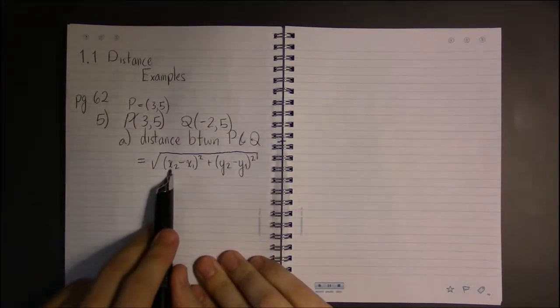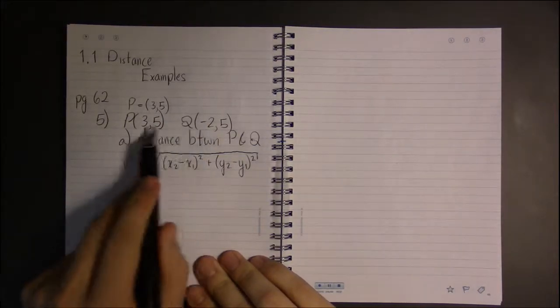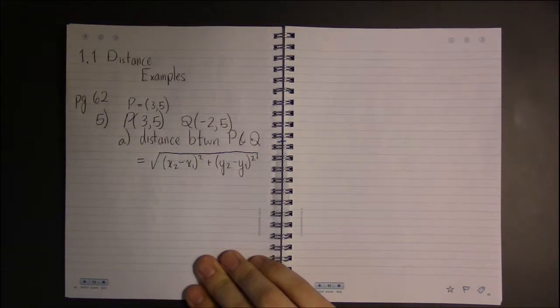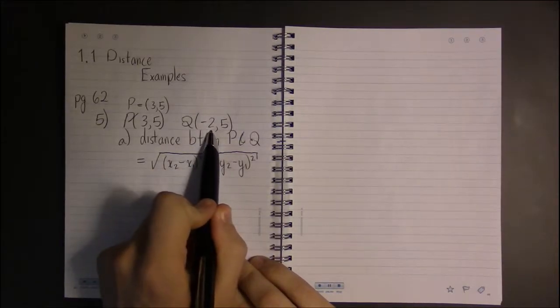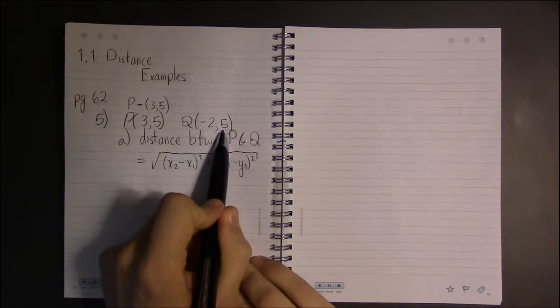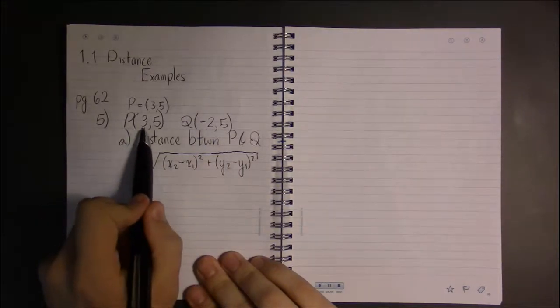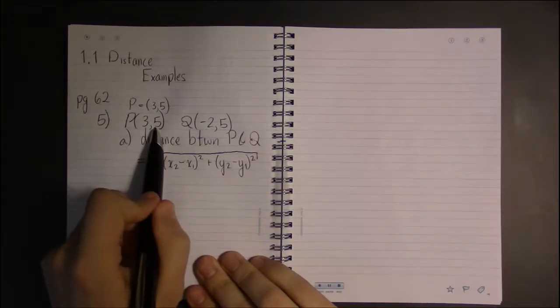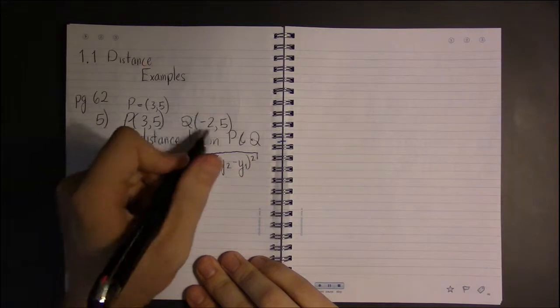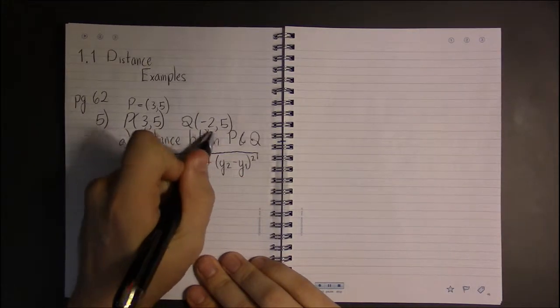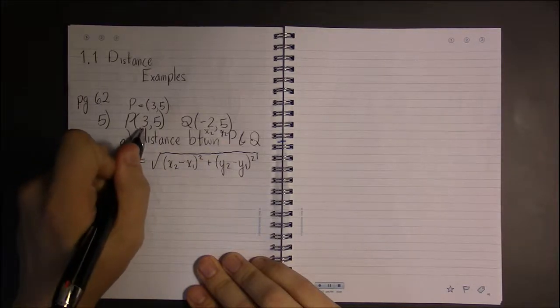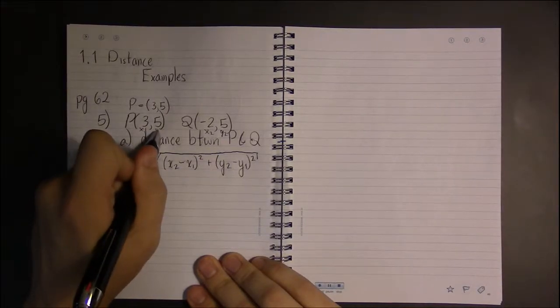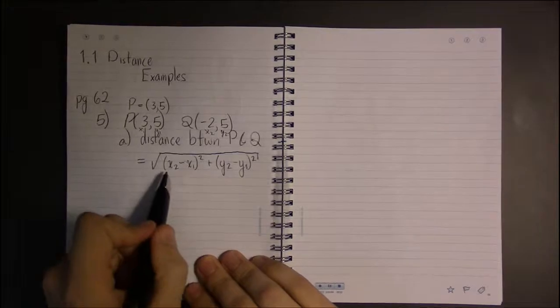Now the question is, what's our x2 and what's our y2? It doesn't really matter, so long as if you label this x2, then you have to label this y2. If you label this x2, then this has to be y2. So either way, let's just say this is (x2, y2), which would make 3 x1 and 5 y1.